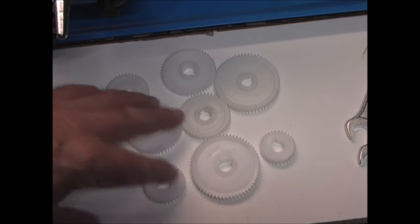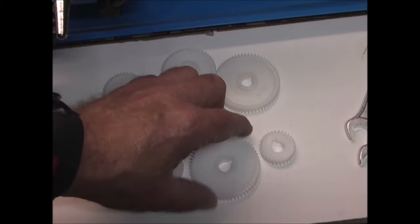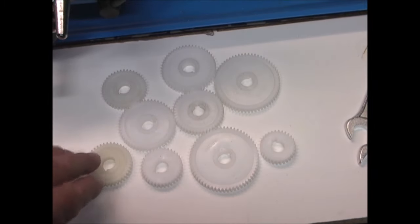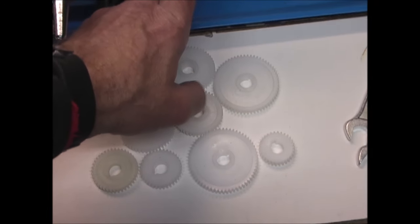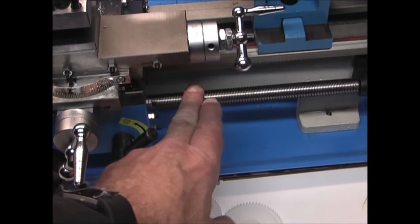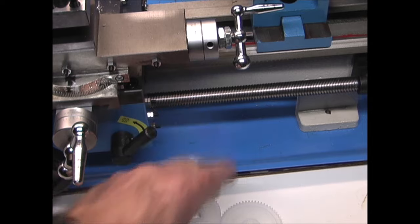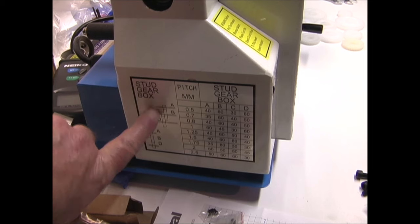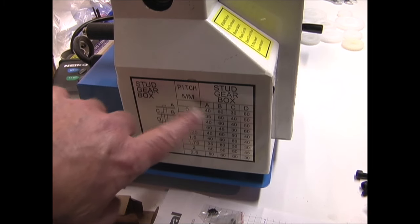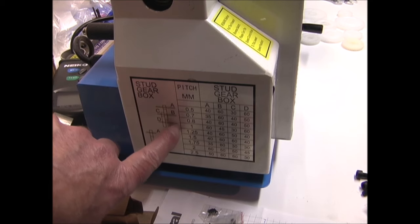Then there's a set of gears of various sizes. That's to adjust the speed of the lead screw. You do that in the back of the lathe. Here on the side of the lathe there's this chart and it shows you which gears you would need to use, which placement, for different speeds and for cutting threads.